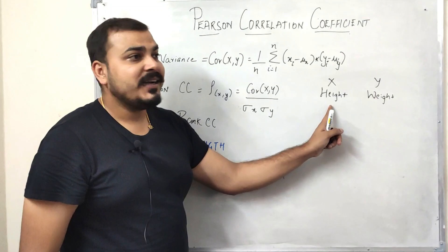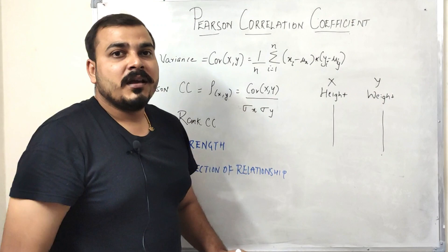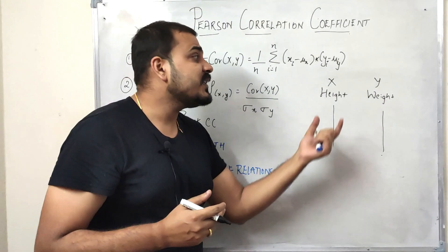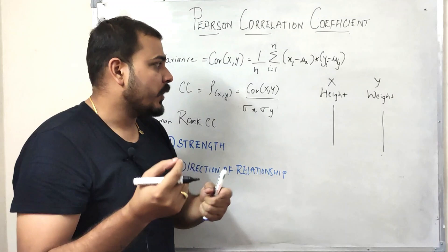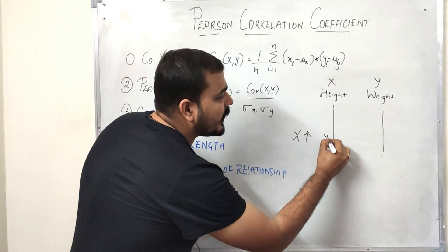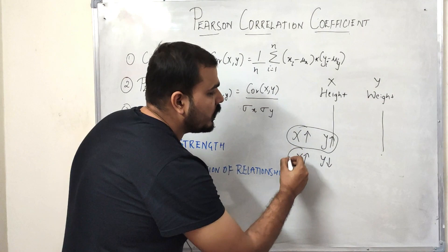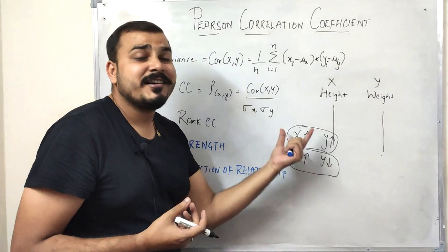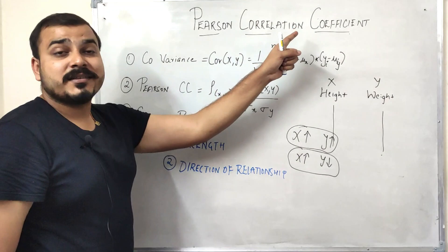With this data, if I have some independent features and a dependent feature, how do I find out the relationship between these two variables X and Y? The relationship I'm talking about is: if X increases, will Y increase? Or if X decreases, will Y decrease? This kind of relationship is very important when doing statistical analysis or applying machine learning algorithms.